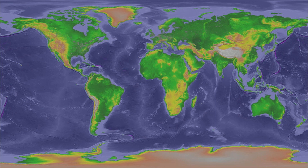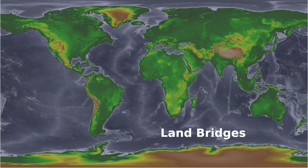When all that ocean water evaporated and fell on land as snow without flowing back into the ocean, sea level would lower, producing land bridges. During the Ice Age, shallow ocean areas between Russia and Alaska, between England and Europe, and between Southeast Asia and Australia would have been exposed, allowing animals and people to migrate to other places after the flood.